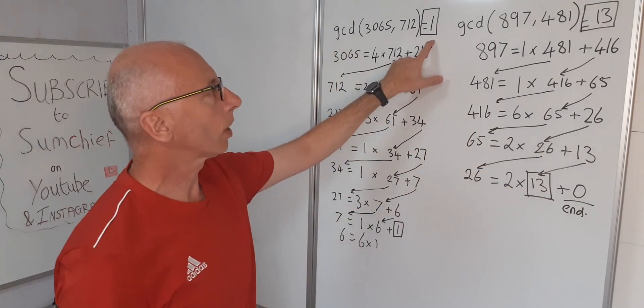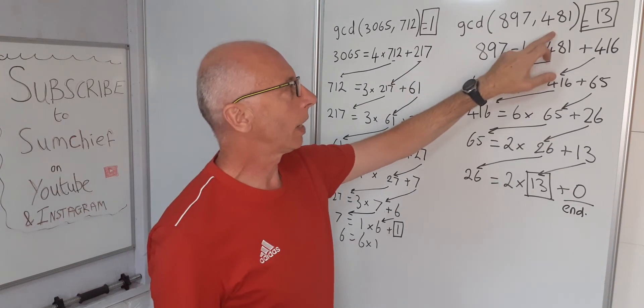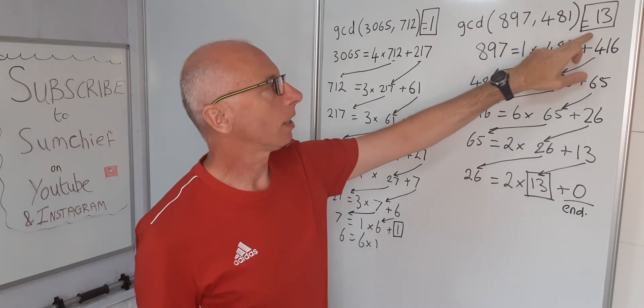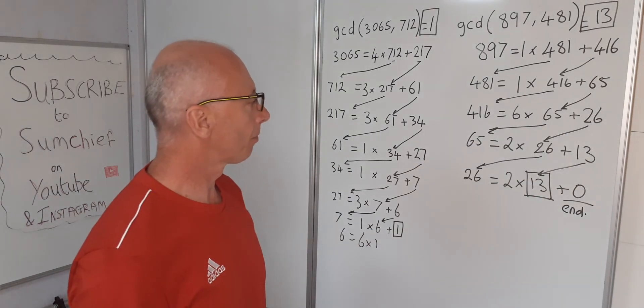So here a 1 when it's relatively co-prime. Here when it's made up of composite numbers which are common to both big numbers there, in this case it's 13.